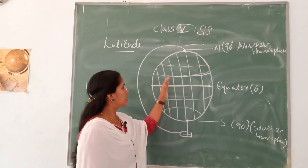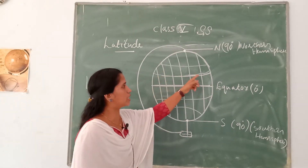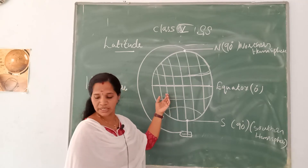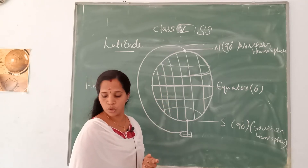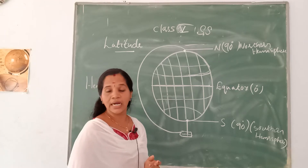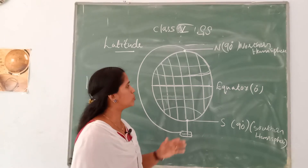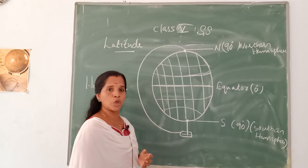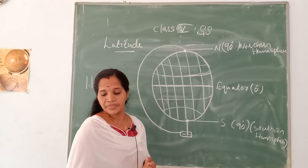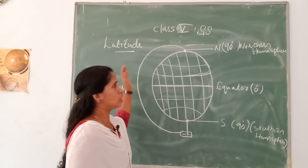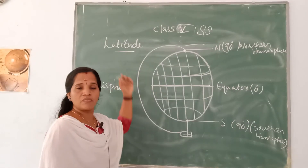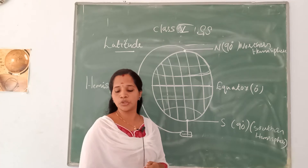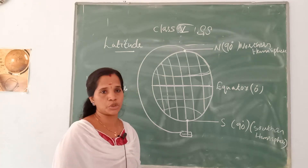On a globe there are horizontal and vertical lines. These lines are imaginary and they help us to locate places correctly on the globe. The use of these horizontal and vertical lines is to help locate places. The next topic is latitude. What is latitude? The line that runs parallel to the equator is called a latitude.